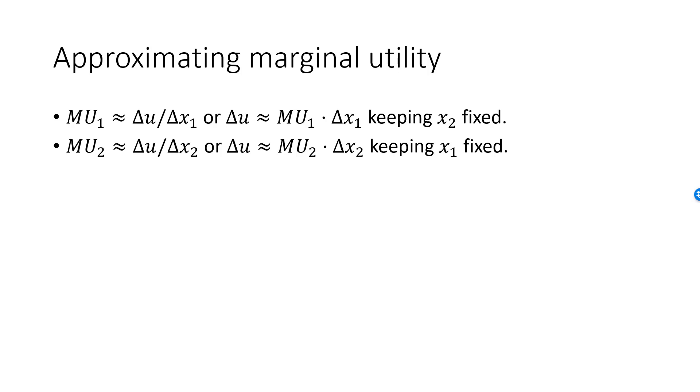The same is true for MU2. If we increase consumption of good 2 by 1 unit keeping consumption of good 1 fixed, then utility will increase by approximately MU2.